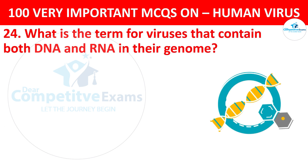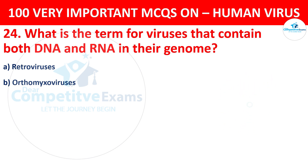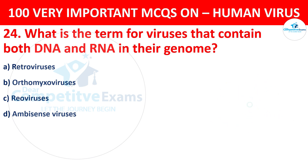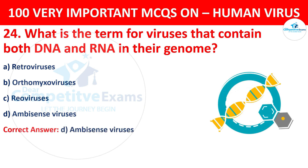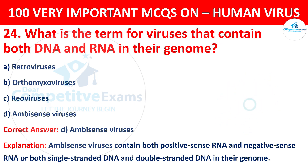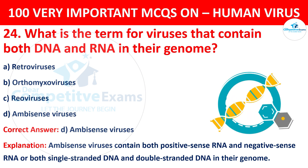Question 24. What is the term for viruses that contain both DNA and RNA in their genome? The options are retroviruses, orthomyxoviruses, reoviruses, or ambisense viruses. The correct answer is ambisense viruses. Ambisense viruses contain both positive-sense RNA and negative-sense RNA, or both single-stranded DNA and double-stranded DNA in their genome.